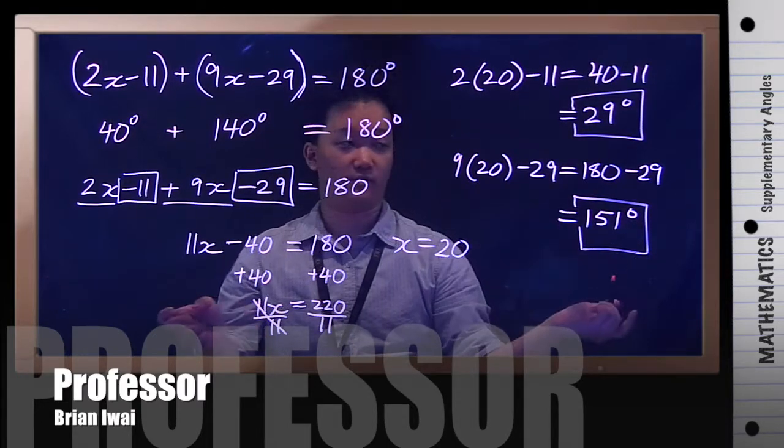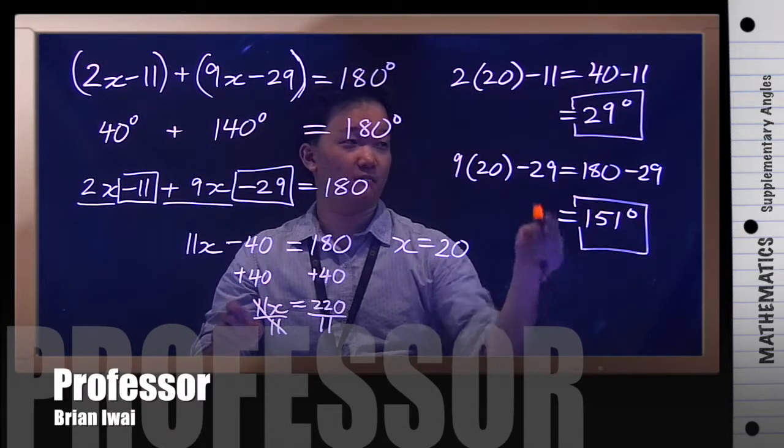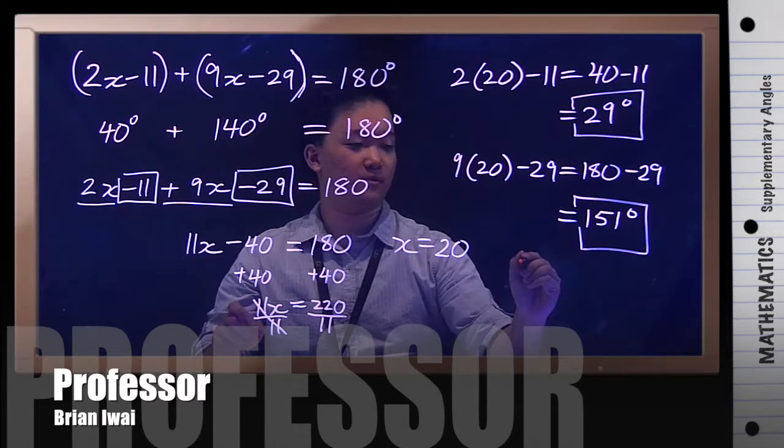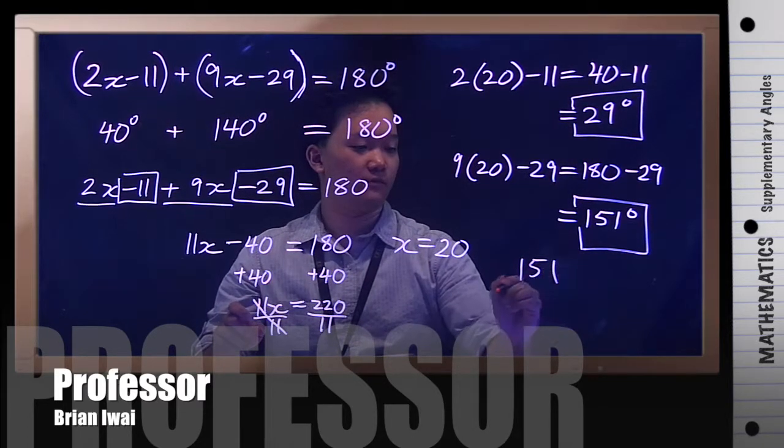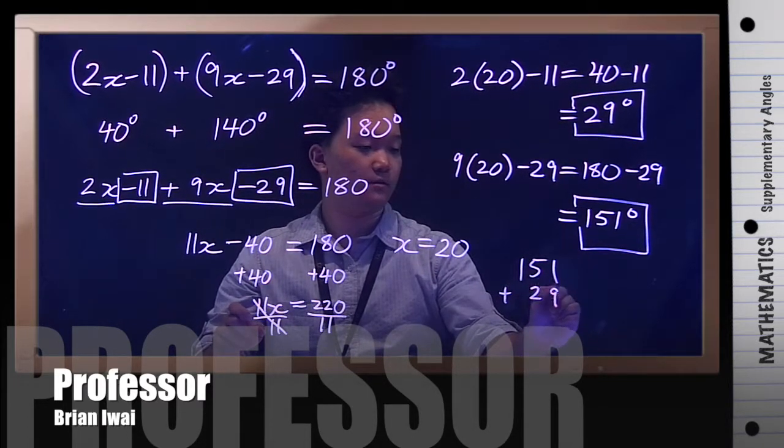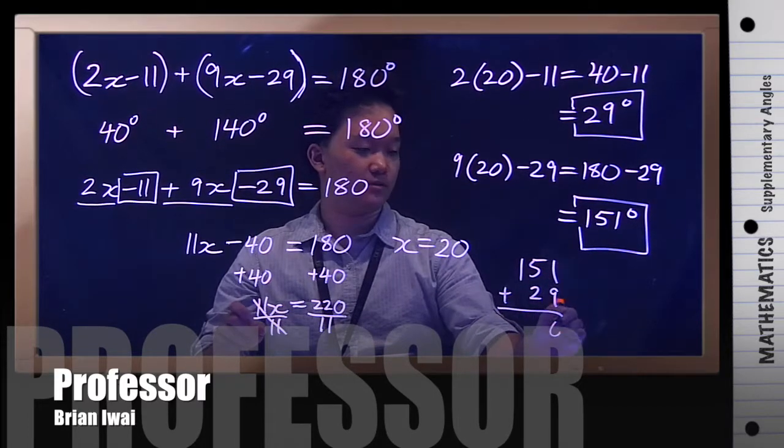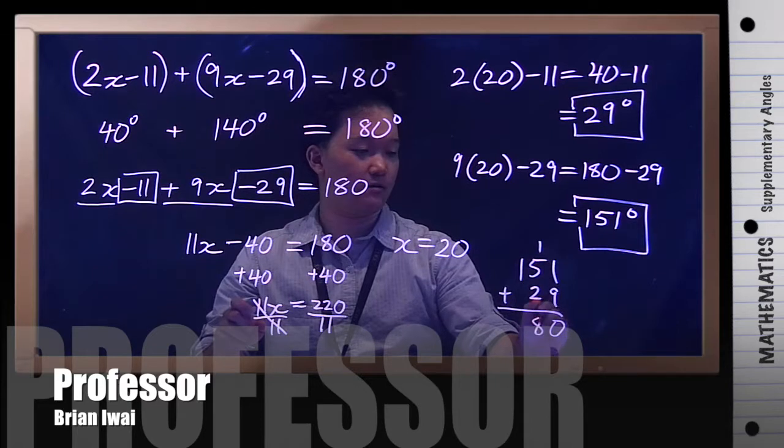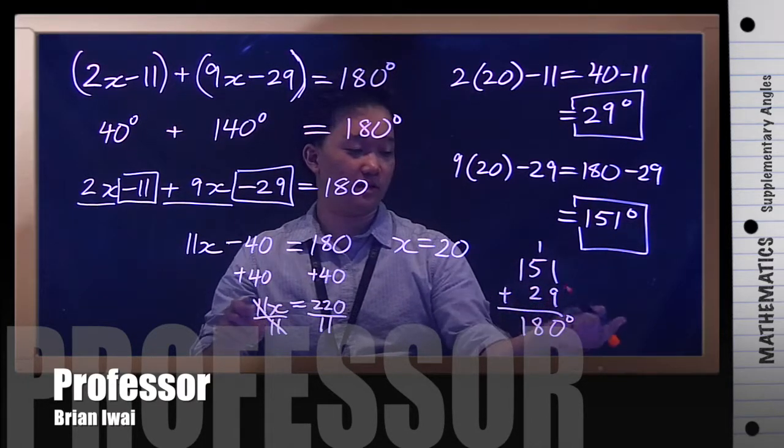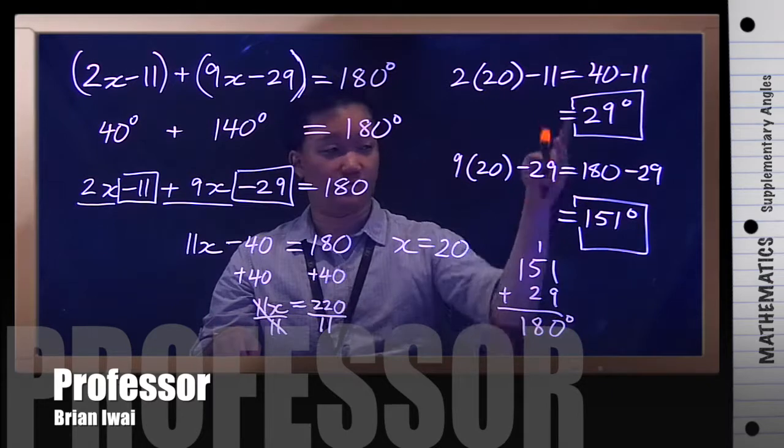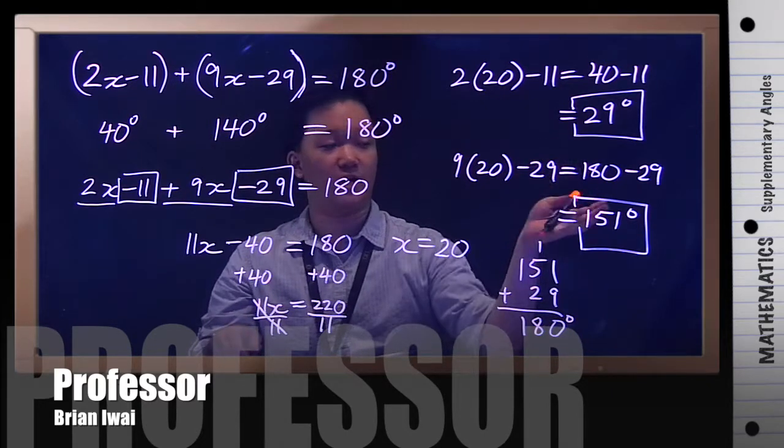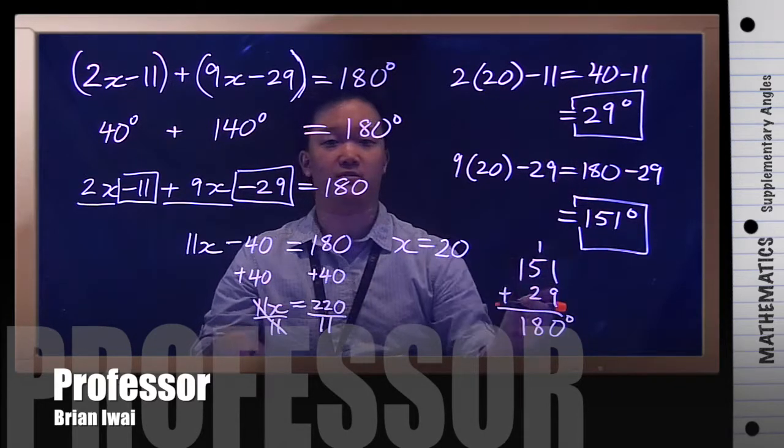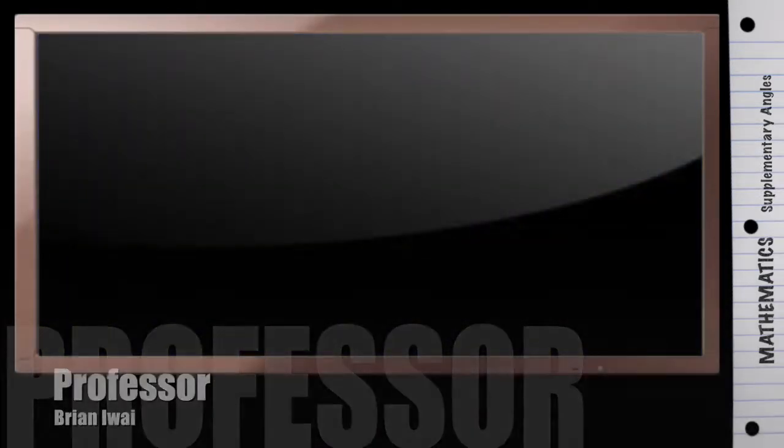And if you're not sure of your answer, you can always check by adding the two: 29 plus 151. So 151 plus 29, 9 plus 1 is 0 carry the 1, 5 plus 1, 5 plus 2 plus 1 is 8, 1, so you get 180 degrees, which you should because again the two angles are supplementary so they should add up to 180. So that's the answer.